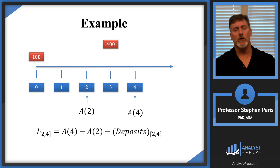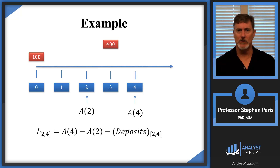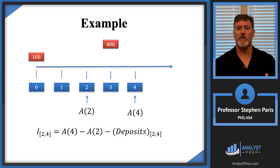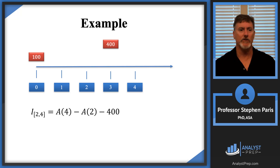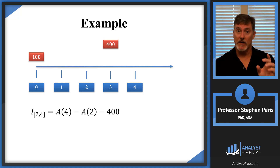I denote the amount of interest earned from time 2 to time 4 as I_{2 to 4}, using interval notation. To find that, you take the amount at time 4, subtract the amount at time 2, and also subtract any deposits made into the account during that period — which in this case is the $400 deposit at time 3. So: I_{2,4} = Amount(4) − Amount(2) − 400.